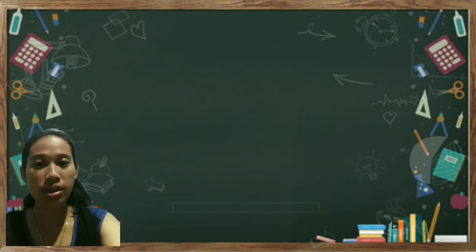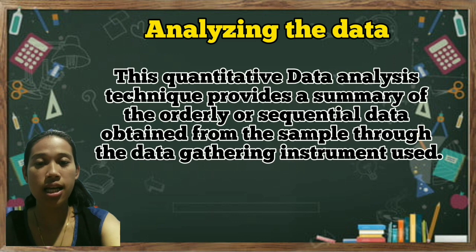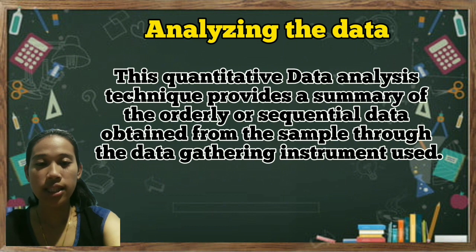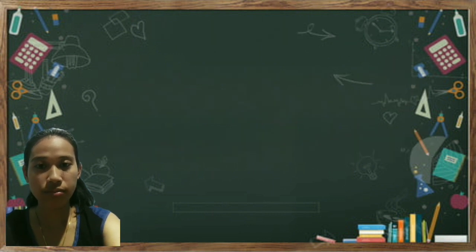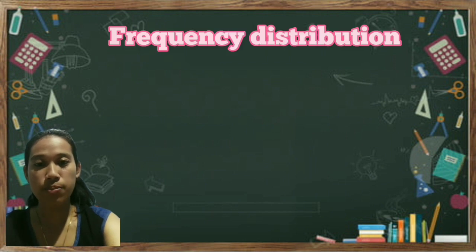After done with step 1, so you've already did the coding system, you're done with the data tabulation, we're going to the next step, which is analyzing the data. In analyzing the data, this quantitative data analysis technique provides a summary of the orderly or sequential data obtained from the sample through the data gathering instrument used.